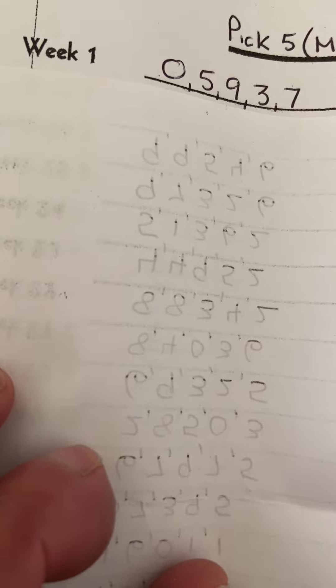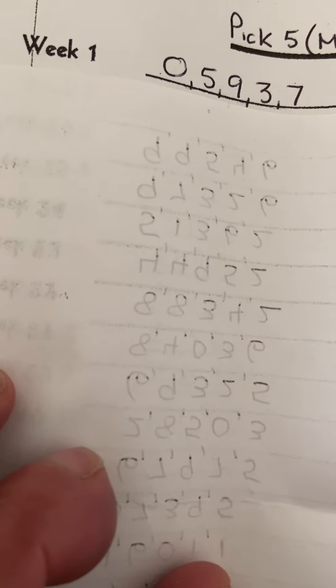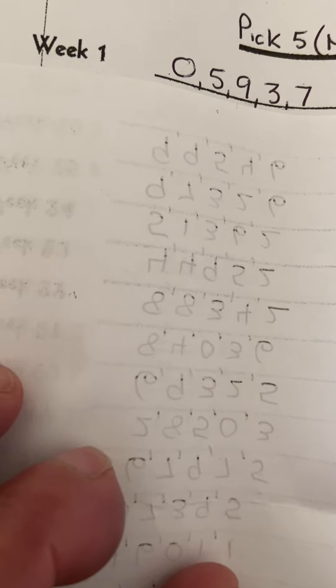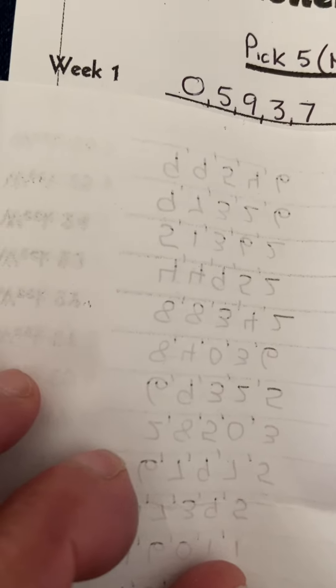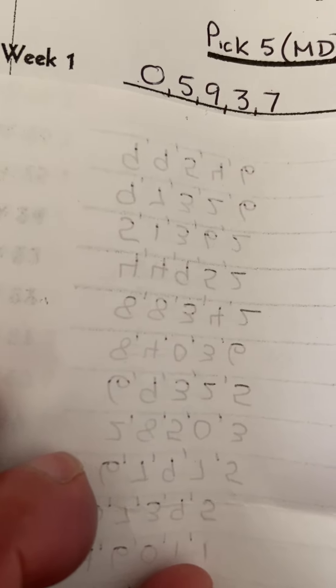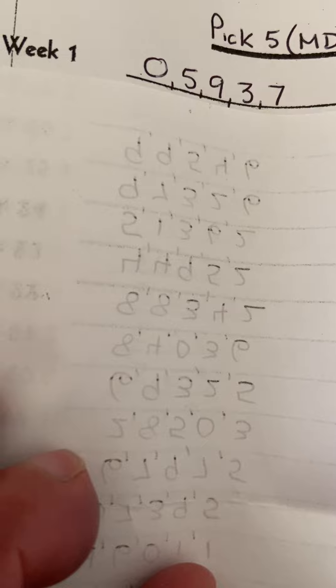I'm not playing about smacking one of these fives in the head. This is what we need. We got 0, 5, 9, 3, 7. That's a pretty good number too. Just make sure you keep it in. If you want to play it in all states, play it in all states. This number is saying something.